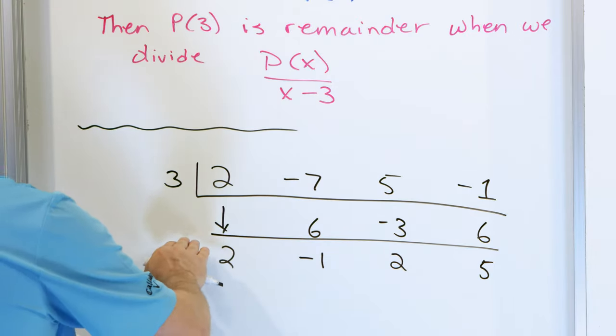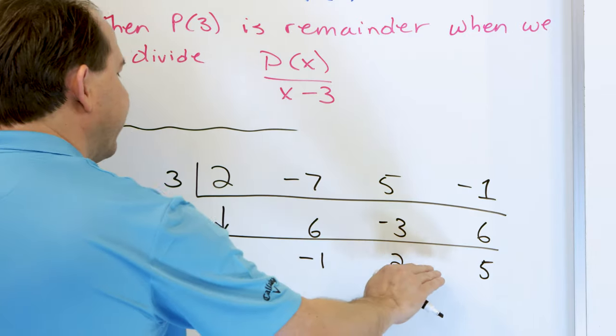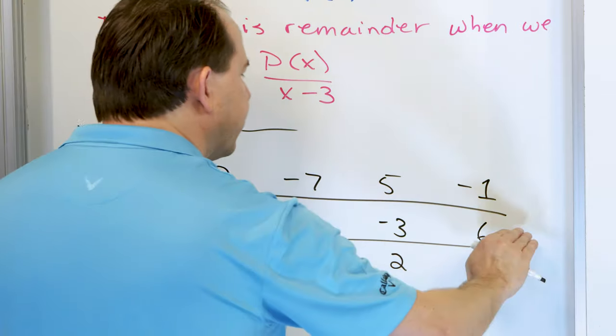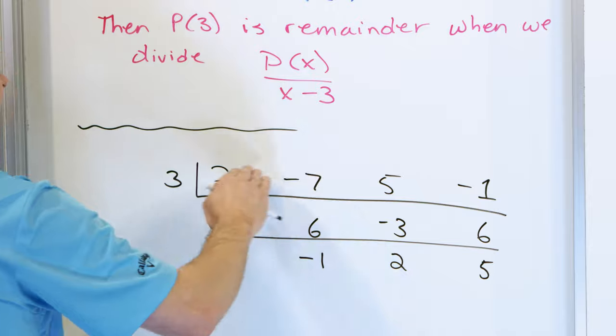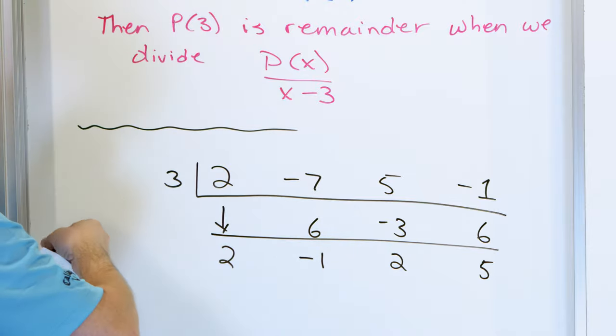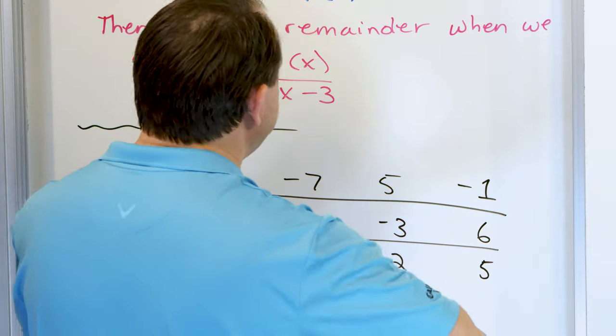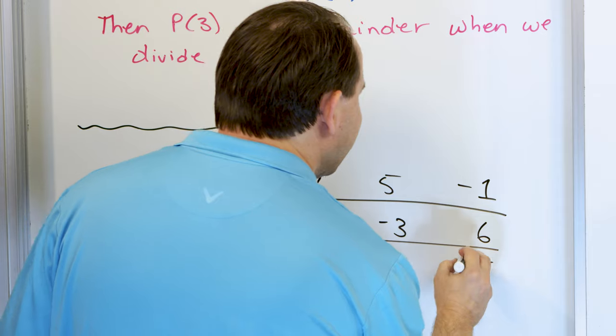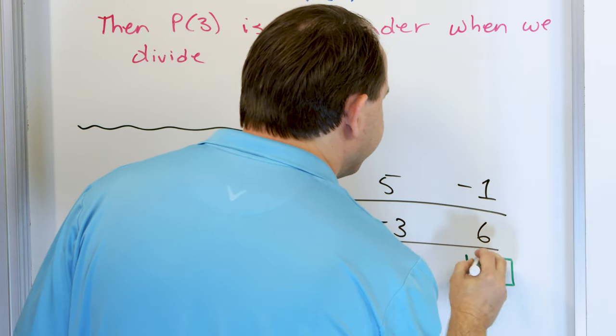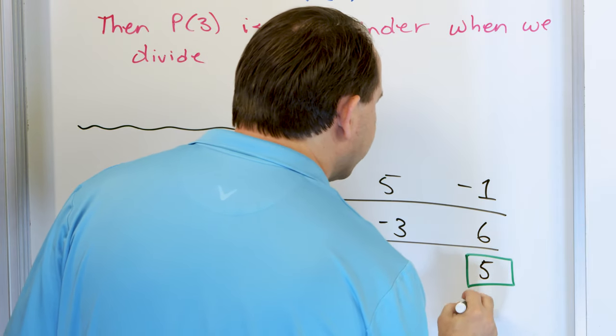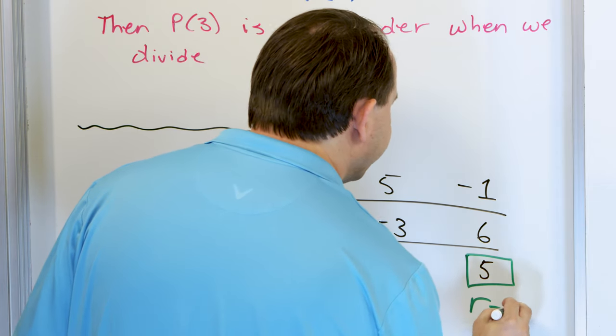I don't care about any of the other numbers — the only thing I care about for the remainder theorem is this last number. The remainder is equal to 5.